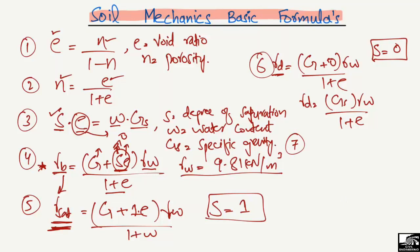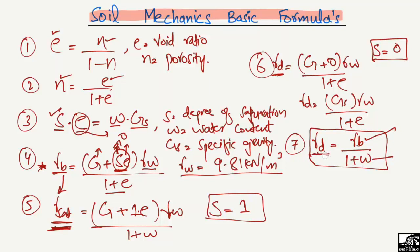The seventh formula is the relation between the dry unit weight and the bulk unit weight: γd = γb / (1+w), where γb is the bulk unit weight and w is the water content. You can also rearrange this to find the bulk unit weight: γb = γd · (1+w).